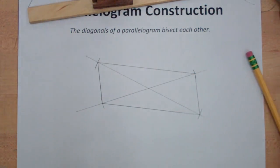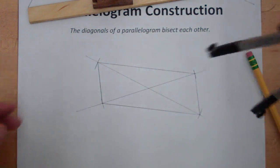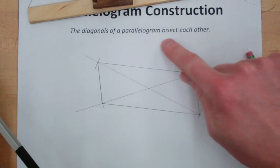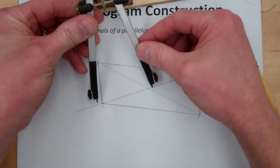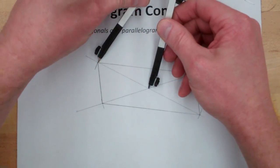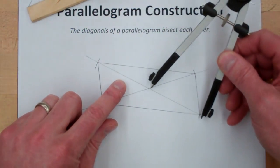So you can see I have my parallelogram now, and I can check it with this property that the diagonals of a parallelogram bisect each other. We have this segment being congruent to this segment.